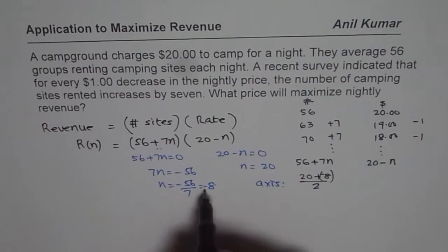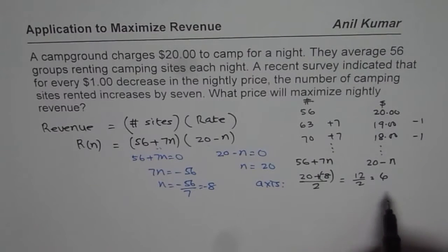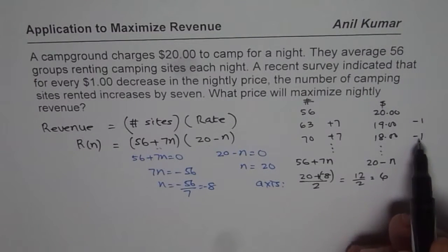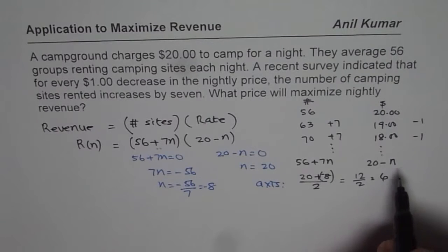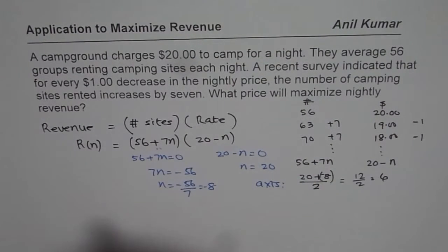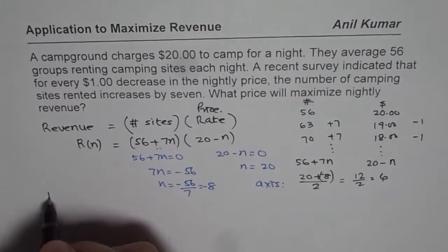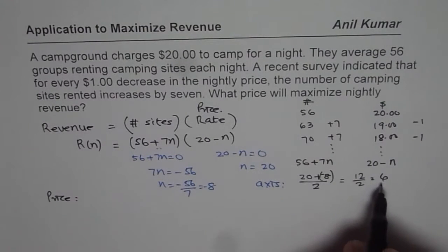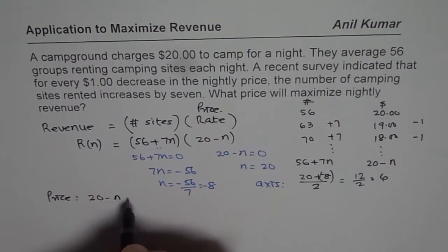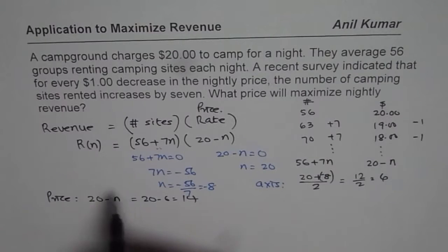So axis is (20 + (−8)) ÷ 2 = 12 ÷ 2 = 6. That means for a $6 decrease, we should get a maximum. What price will maximize the nightly revenue? Price is the rate, which is 20 minus n, where n is 6. So it is 20 − 6 = $14. You can also find the maximum revenue by substituting n = 6.